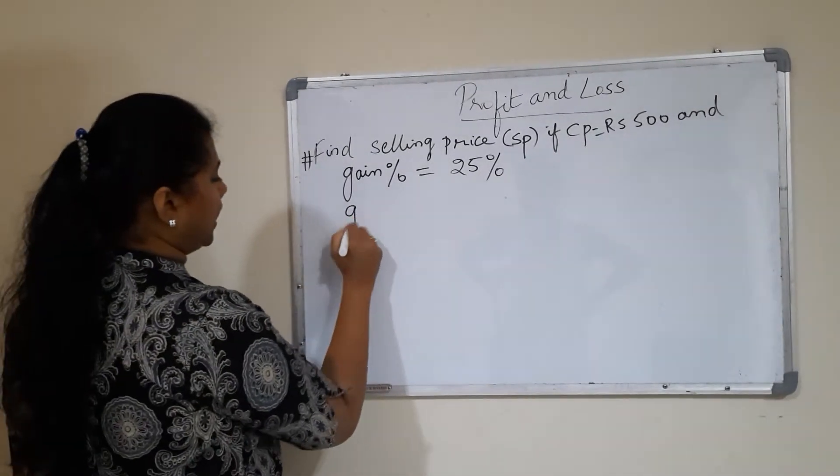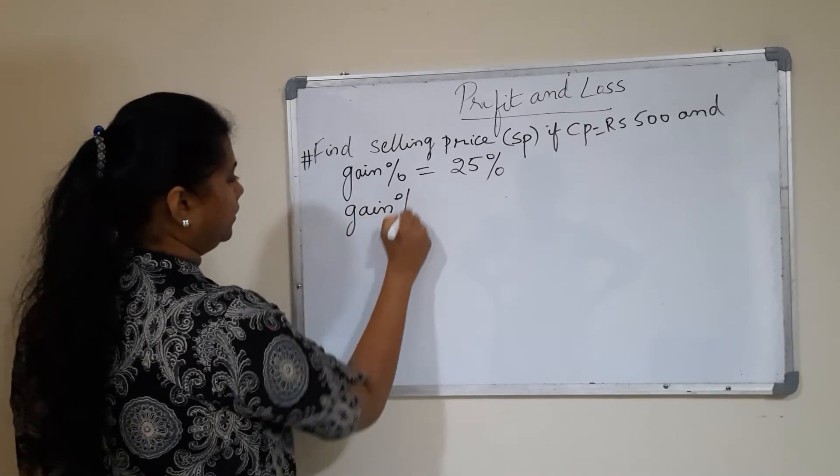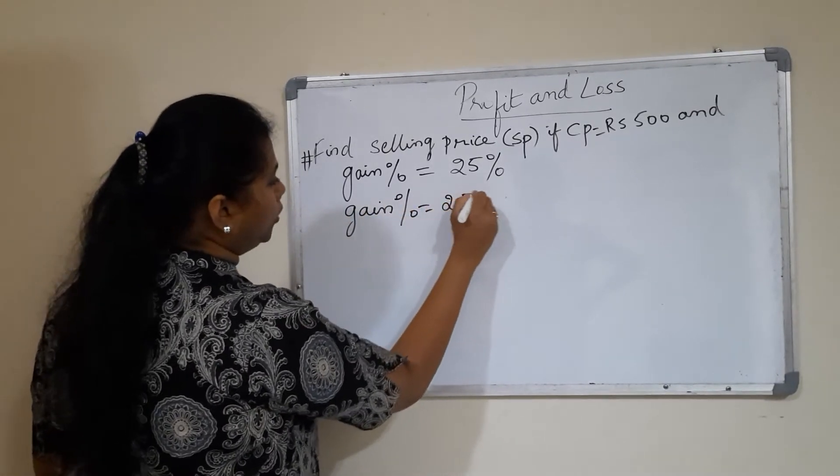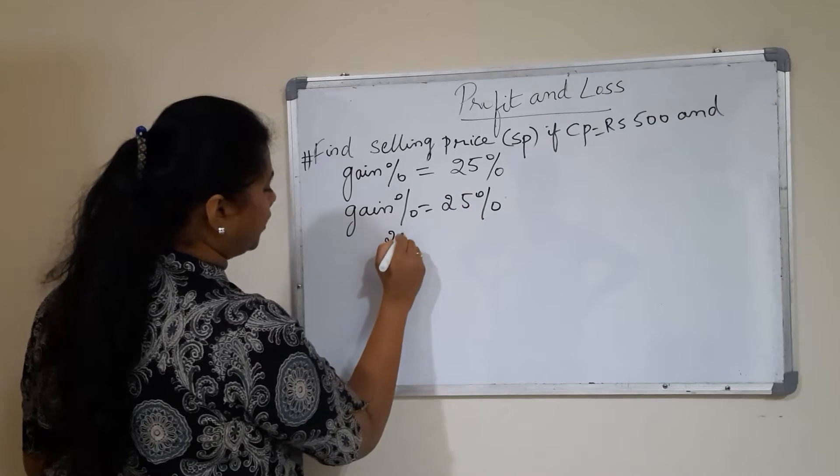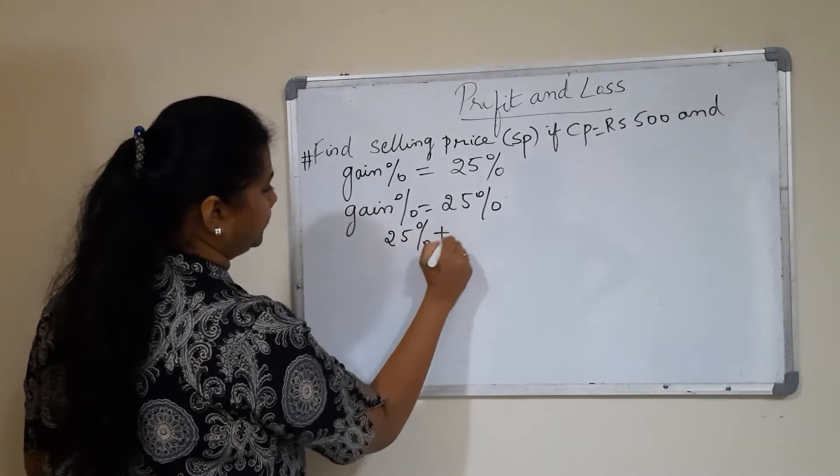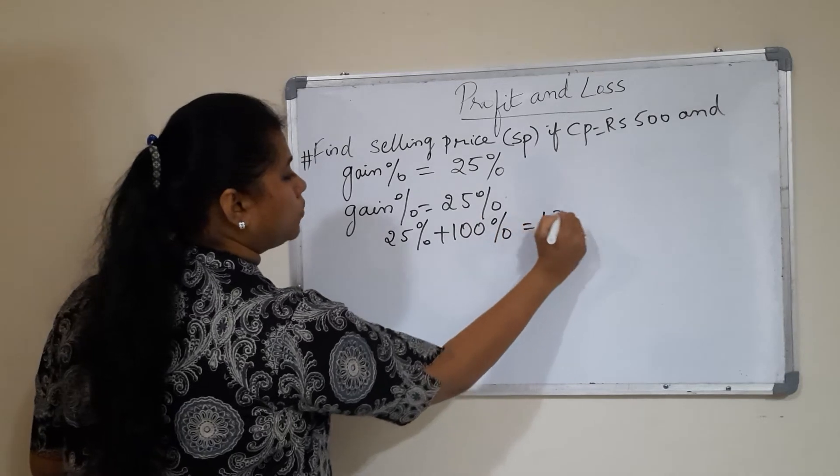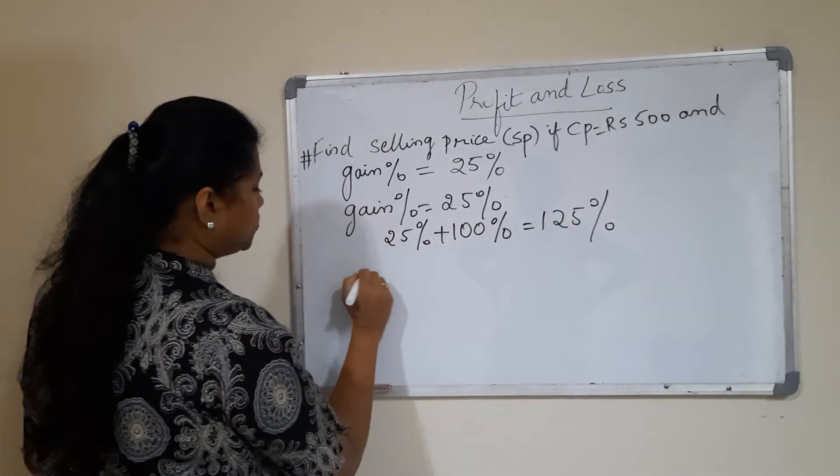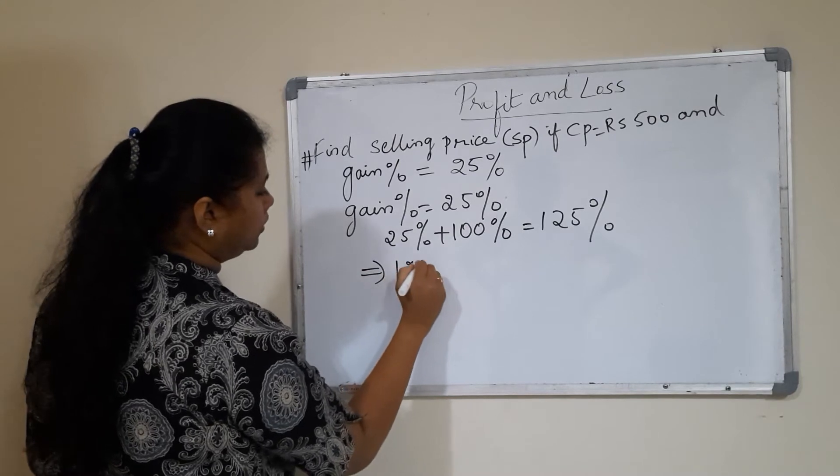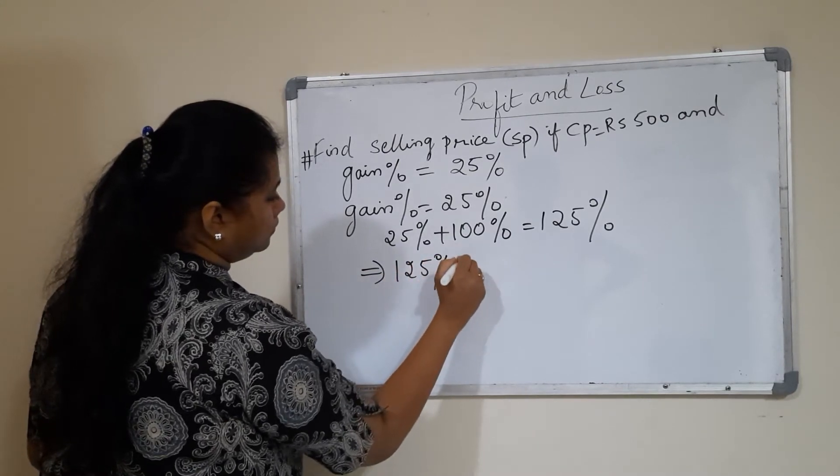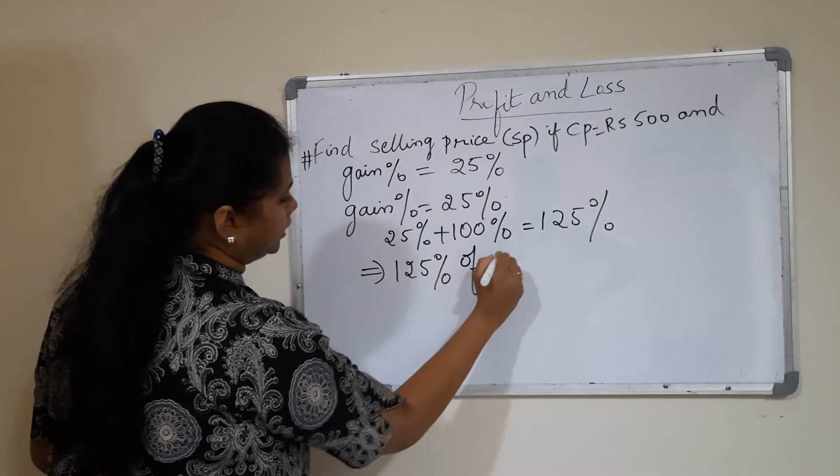It is given that gain percent is 25%. What you do is add this 25% to 100%, and you get 125%. Now you find out 125% of CP.